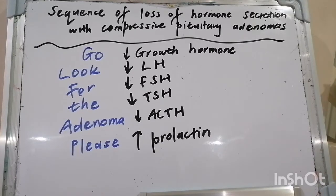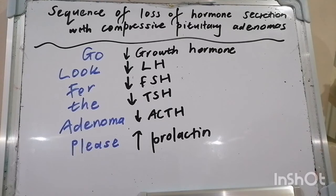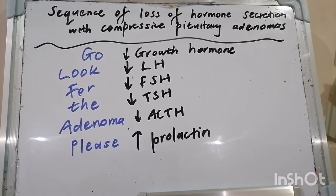Changes in pituitary hormone secretion include either hyperfunction or hypofunction. Examples of hyperfunction include excess growth hormone causing acromegaly, excess ACTH causing Cushing syndrome, and excess prolactin causing secondary amenorrhea or male infertility.